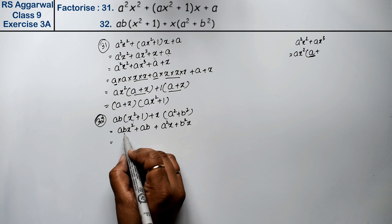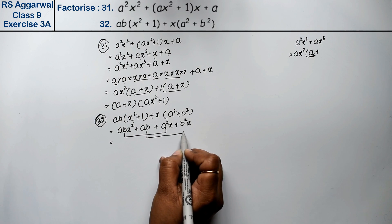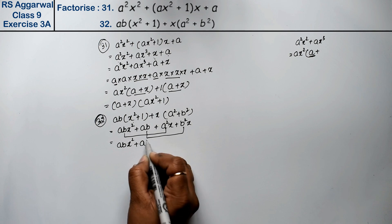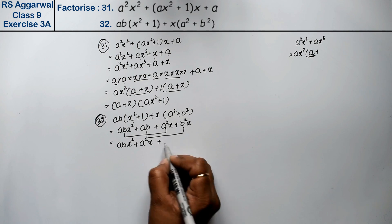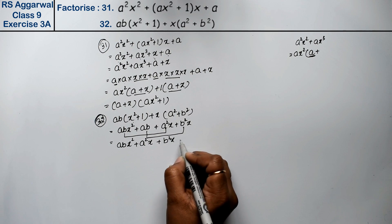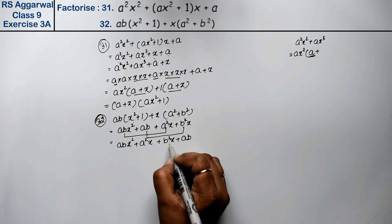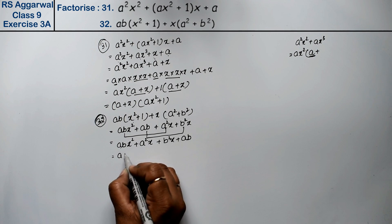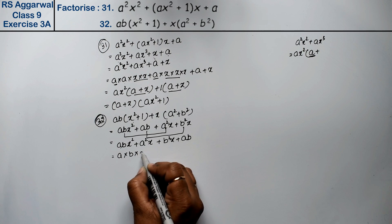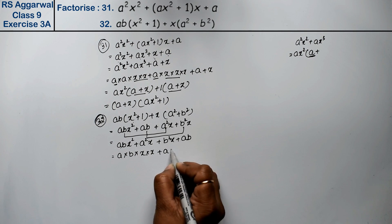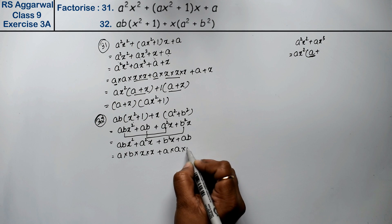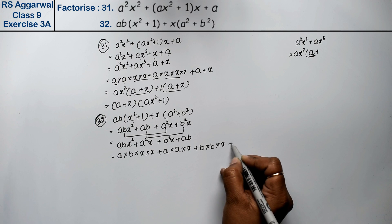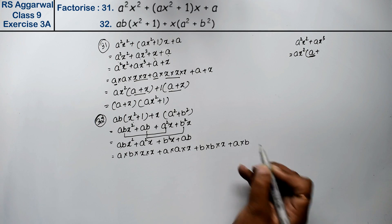We take both parts and rearrange. We write abx² plus a²x plus b²x plus ab. Elaborating this: a into b into x into x, plus a into a into x, plus b into b into x, plus a into b.